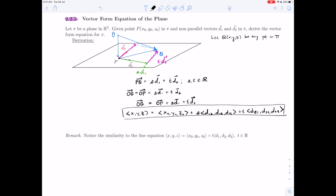I want us to remark upon the similarity to our line equation. We have the (x, y, z), we have a known point, we have a direction here. Instead, we have not just one, we have two directions.